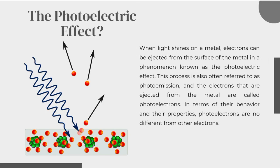The photoelectric effect. When light shines on a metal, electrons can be ejected from the surface of the metal in a phenomenon known as the photoelectric effect. This process is also often referred to as photoemission, and the electrons that are ejected from the metal are called photoelectrons. In terms of their behavior and their properties, photoelectrons are no different from other electrons.